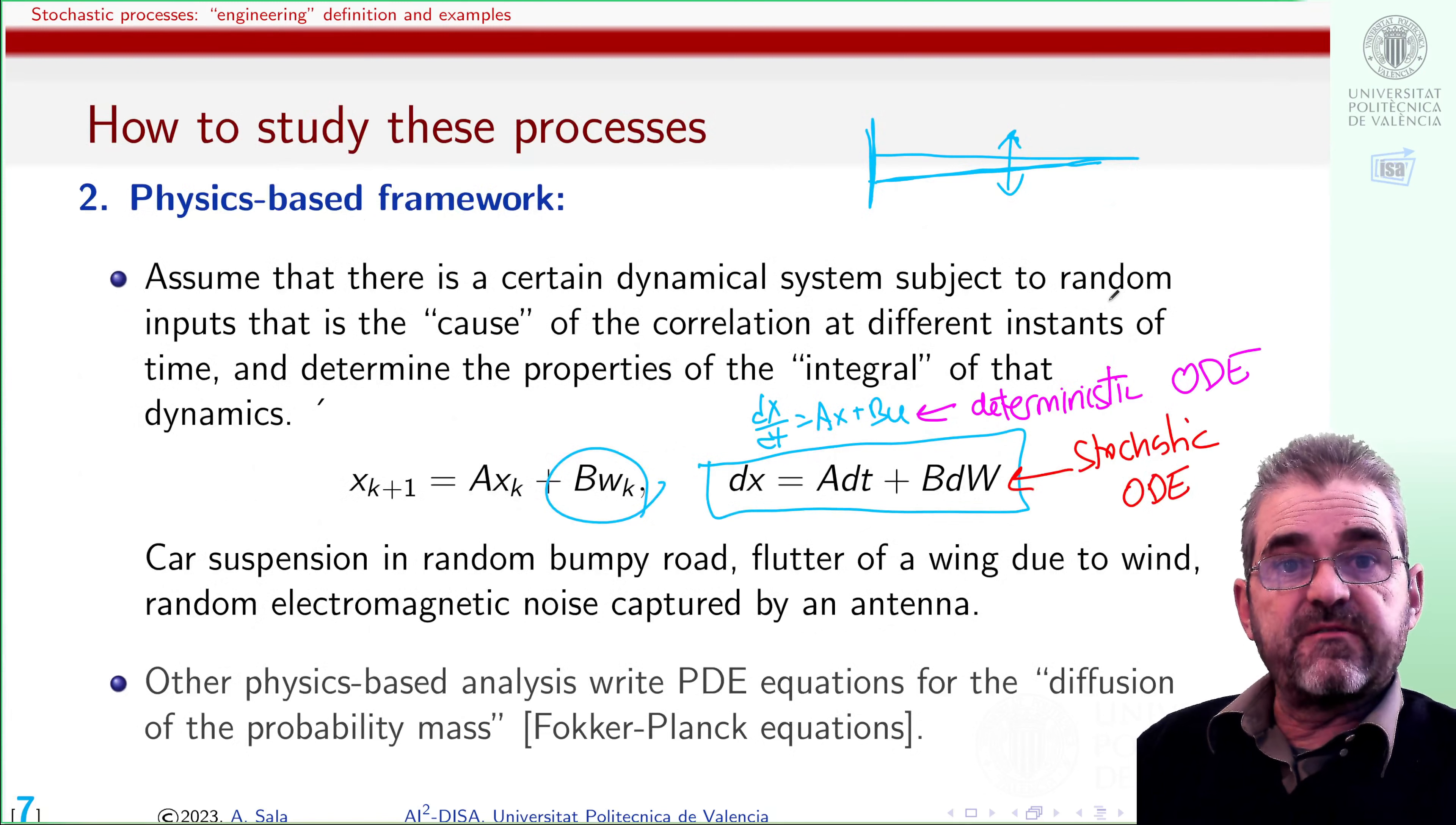And in fact, there is an alternative physics-based framework for stochastic process, which is called the Fokker-Planck equations, in which they are kind of diffusion, partial differential equations, to model the diffusion of the probability mass. Diffusion of the probability mass gives a different set of, in this case, partial differential equations, modeling these stochastic processes. Of course, details are not the objective here.